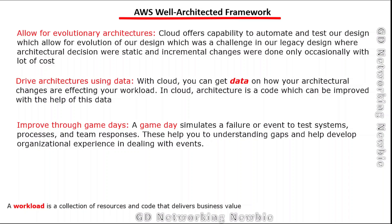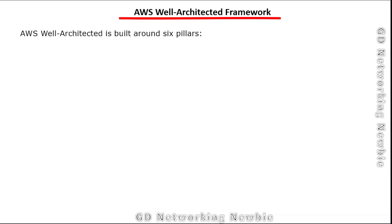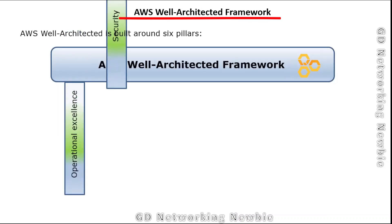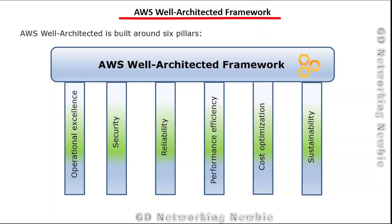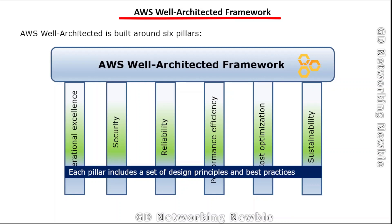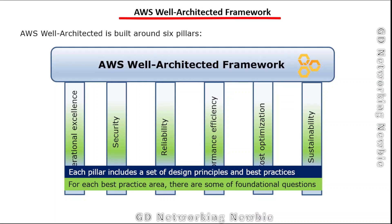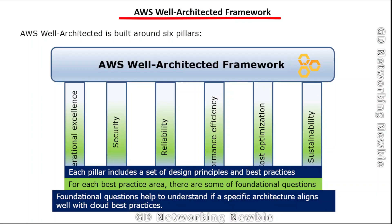So these are some general design principles which are part of the Well-Architected Framework. AWS Well-Architected Framework provides a set of questions and design principles across six pillars: operational excellence, security, reliability, performance efficiency, cost optimization, and sustainability. Each pillar includes a set of design principles and best practice areas, and within each best practice area there are foundational questions that help understand if a specific architecture aligns with cloud best practices. We'll continue discussing the AWS Well-Architected Framework pillars in future videos. Thank you for your time — hope to see you in a future video.